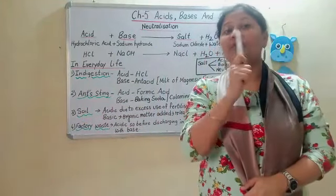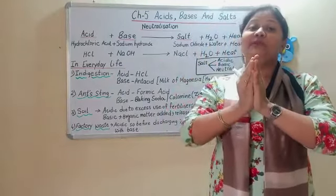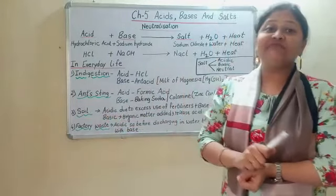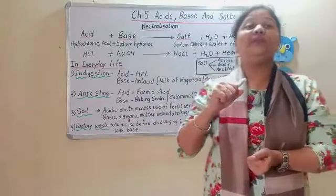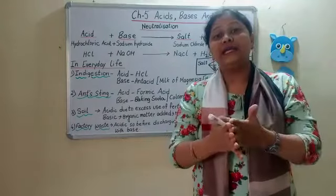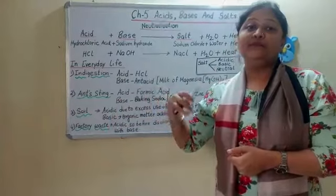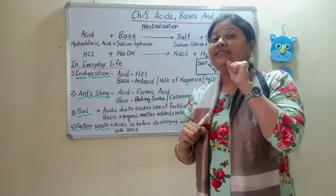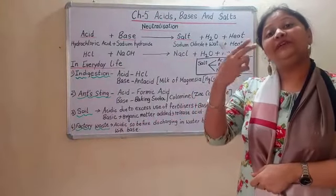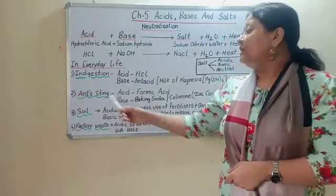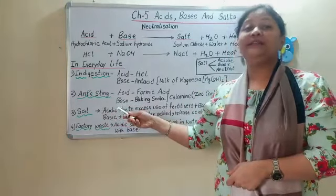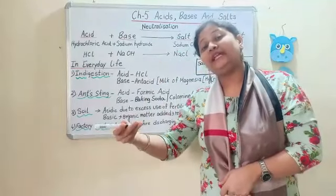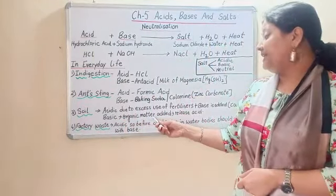The third application is soil treatment. Soil should neither be acidic nor basic for the proper growth of plants. When soil becomes very acidic due to excessive use of fertilizers, you neutralize it by adding bases such as quicklime (calcium oxide) or slaked lime (calcium hydroxide). When soil is basic, you add organic matter to the soil, which releases acid to neutralize the basicity.